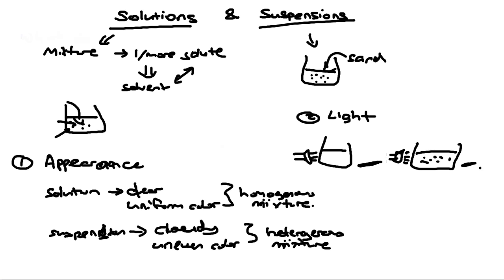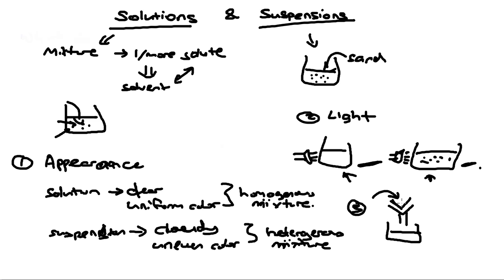By shining a light, you can test whether it's a solution or a suspension. The last method is filtering. If you place a filter paper in a funnel and pour a solution through, because the solutes are all dissolved, the entire solution will pass through the filter paper into your beaker with no residue. But if you pour a suspension in, because the solid particles are larger than the pores of the filter paper, only the liquid passes through while the solutes remain on the filter paper as residue.